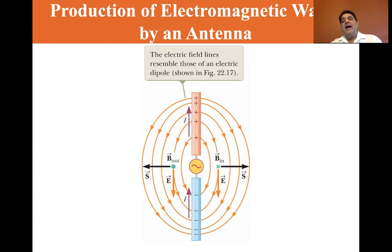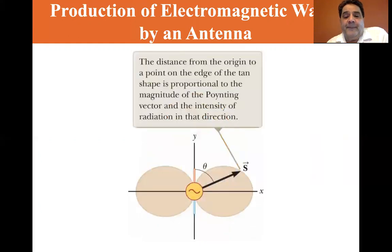So it's radiating outward and the distance from the origin to a point on the edge of the tan shape is proportional to the magnitude of the Poynting vector and the intensity of radiation in that direction. So you can see this almost as like a little donut that is surrounding the antenna. It's the radiation pattern for this particular antenna.